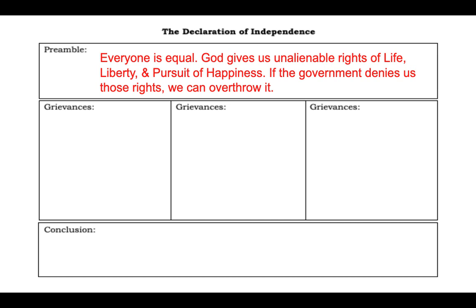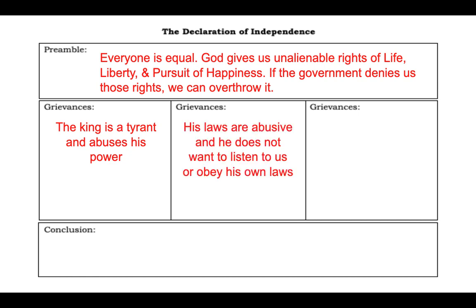The conclusion wraps it all up: excerpt six says 'We therefore solemnly publish and declare that these United Colonies are and of right ought to be free and independent states.' The colonies are essentially saying that because of all these terrible things done to them, they are declaring themselves free and independent and are no longer subjects of England and King George III. Now type in the summary at the bottom of page 41.